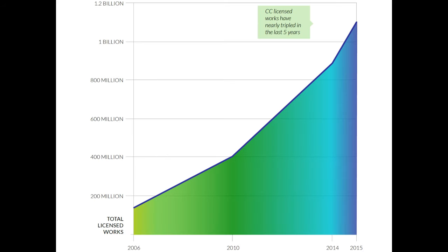People are using Creative Commons licenses at an increasing rate. From our State of the Commons report in 2015, we reported that over 1.1 billion licensed works on the web were available under a CC license. It'll be interesting to see how high this number goes as we come out with this year's State of the Commons report.